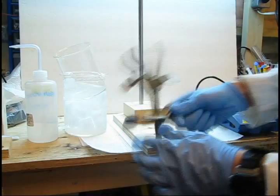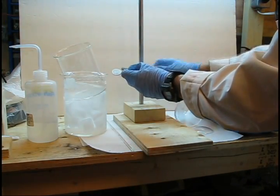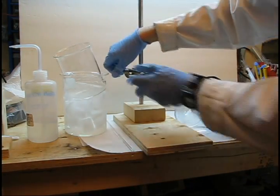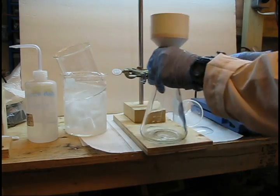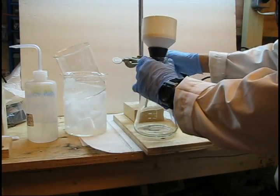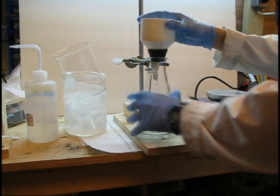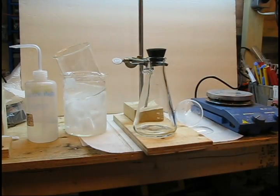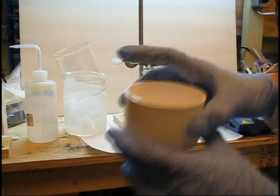While your isopropanol solution is cooling, set up your vacuum filtration flask and funnel. Clamp the flask to a stand because the flask can tip during filtration. Don't forget to place a piece of filter paper into the funnel at this time.